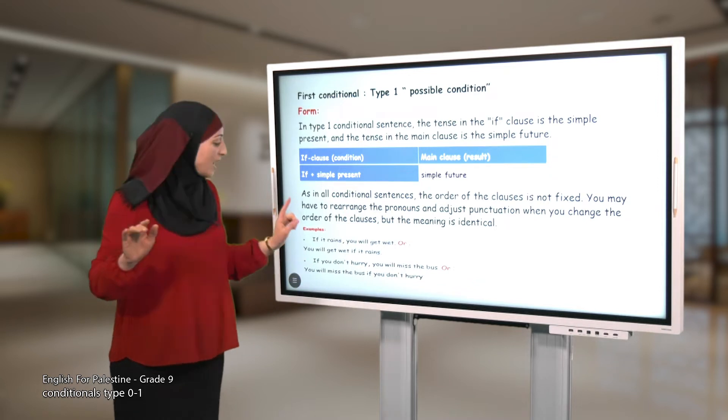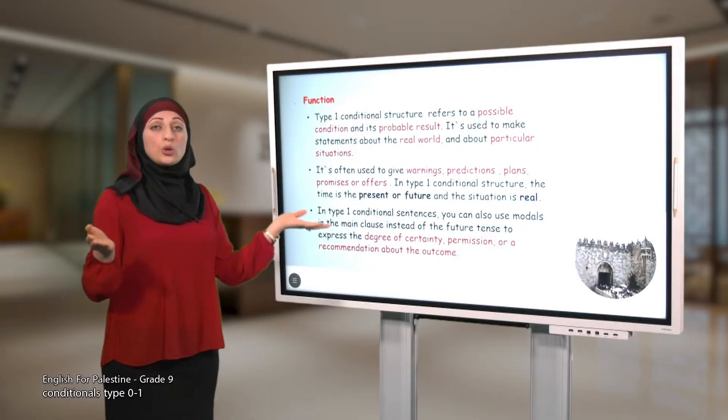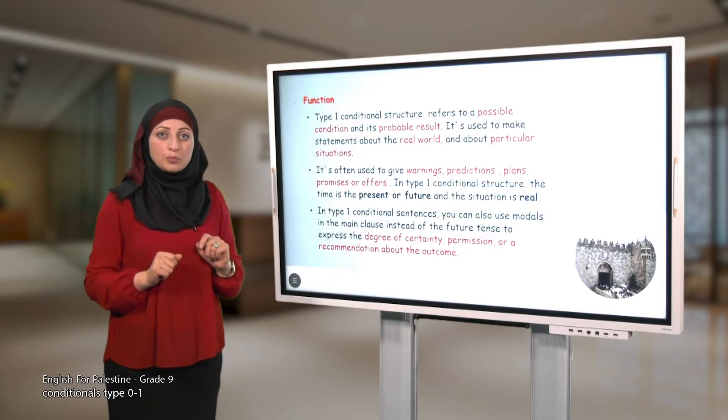I have an example here: If it rains, you will get wet. Since I started with the if clause, I use a comma in the middle. But if I started with the main clause - like you will get wet if it rains - I didn't use a comma here. So the function of conditional type one is talking about possible things, real things, warnings, predictions, and plans.